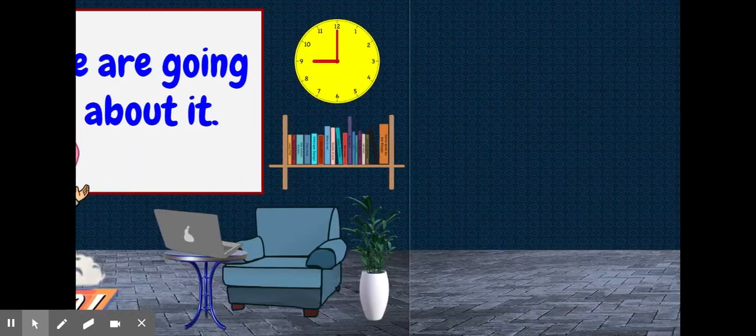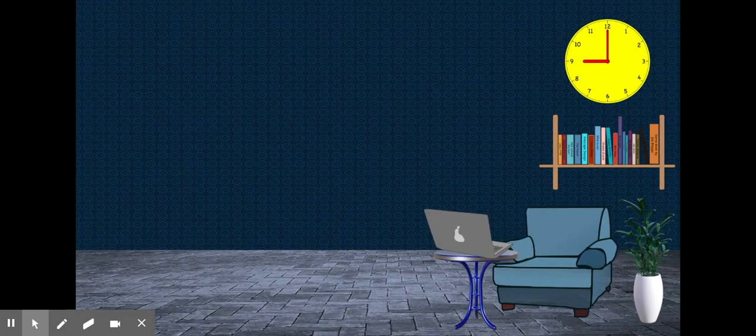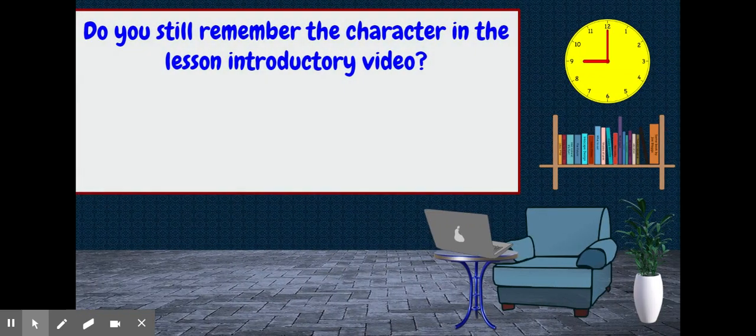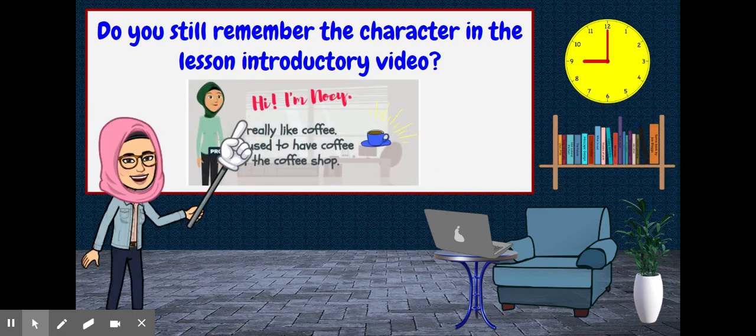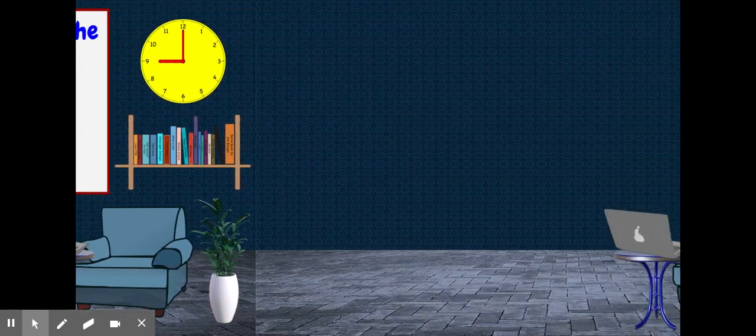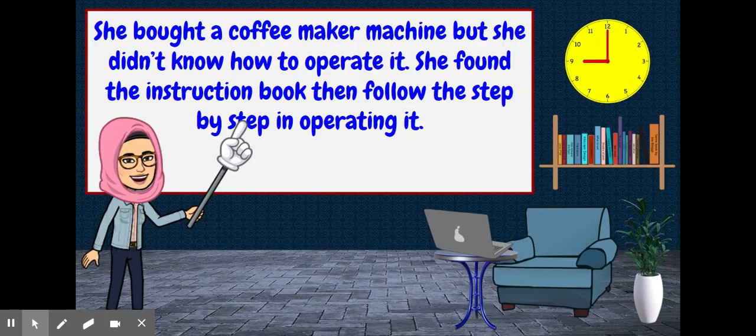But before that, do you still remember the character in the lesson introductory video? Yes, it's Annisa. She bought a coffee maker machine, but she didn't know how to operate it. So she found the instruction book, then followed step by step in operating it.